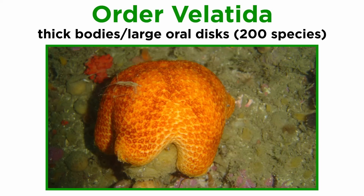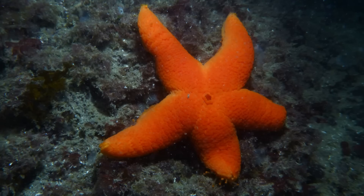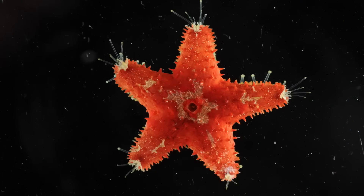Order Velatida contains about 200 species of starfish that have thick bodies and large oral discs. They are most common in the deep sea and colder regions, and are often extremely flexible and have weakly developed skeletons.